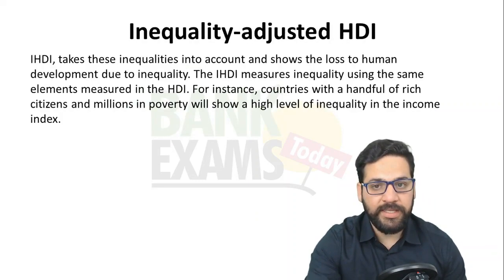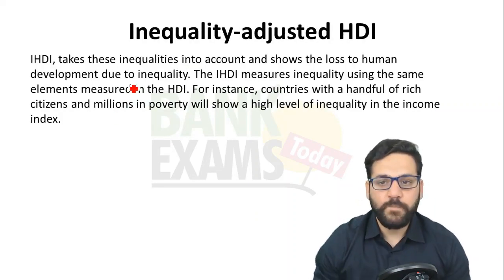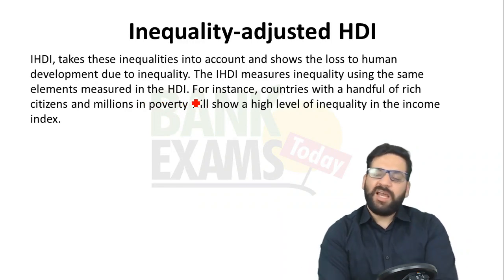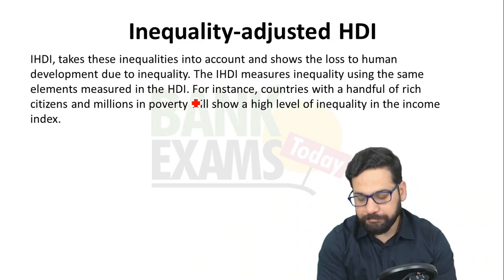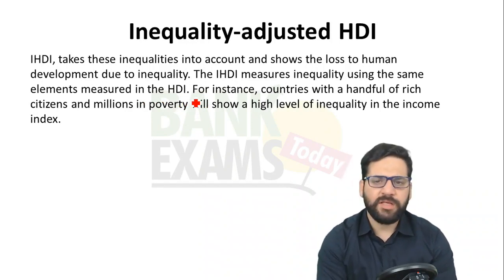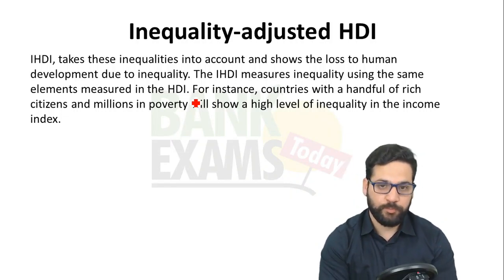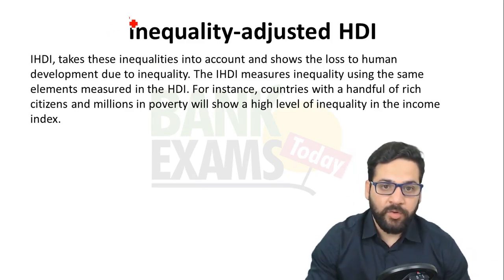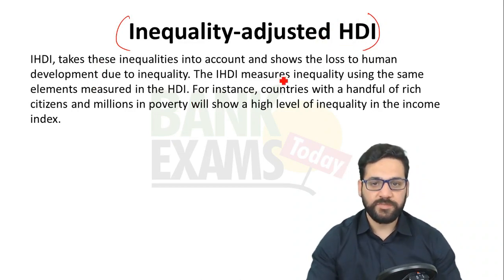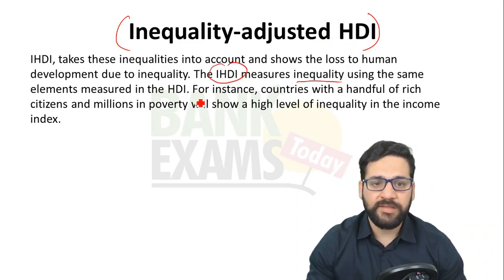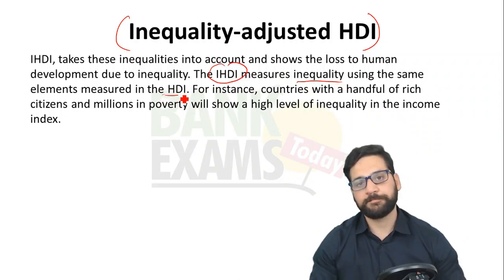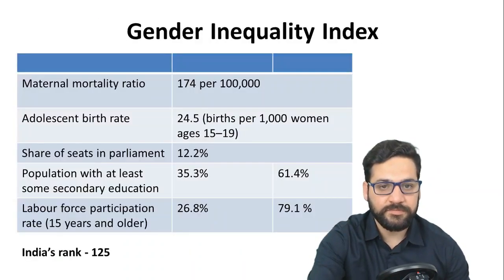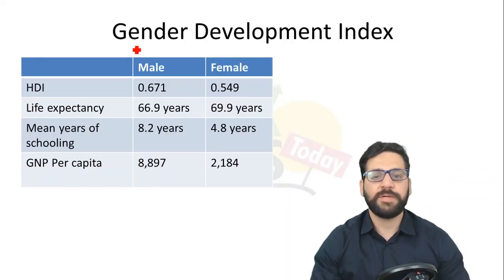The Inequality-Adjusted HDI (IHDI) takes inequality into account when finding the index value. IHDI measures inequalities using the same three elements as the HDI — but measures the inequality between the rich and the poor within a country.